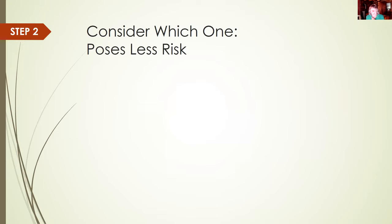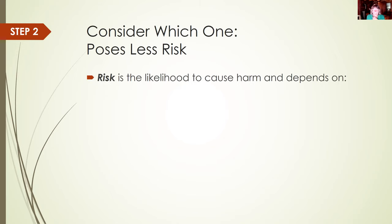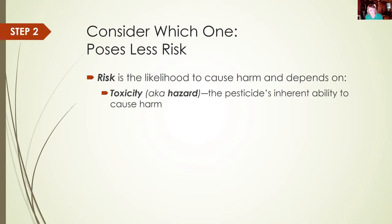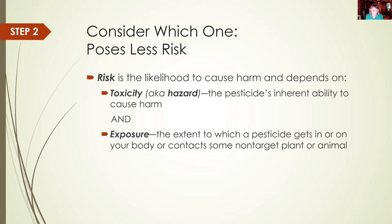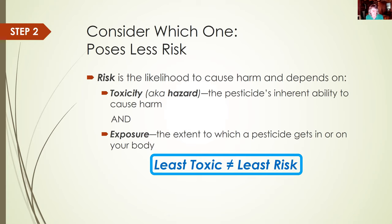You'll also want to consider which one poses less risk. Every registered pesticide should not pose any unreasonable risk when used according to label directions, but accidents happen. What you consider acceptable risk will depend on circumstances. For example, if a product says it's toxic to aquatic invertebrates, that won't bother me at home on landlocked property, but I might not want to use it at our family camp on a lake up north. So you have to minimize risk, which is the likelihood to cause harm. It depends on two things: the toxicity or hazard — the pesticide's inherent ability to cause harm — and exposure, the extent to which a pesticide gets in or on your body or contacts some non-target plant or animal. Any chemical can be toxic at some level of exposure, but if you can avoid exposure, even a highly toxic pesticide is unlikely to harm you. Least toxic does not equal least risk — you need to consider both factors.